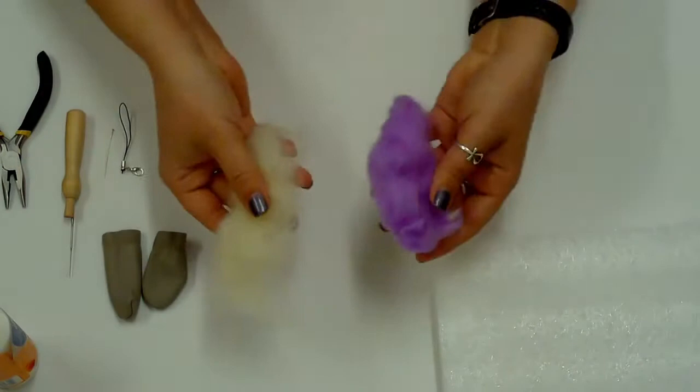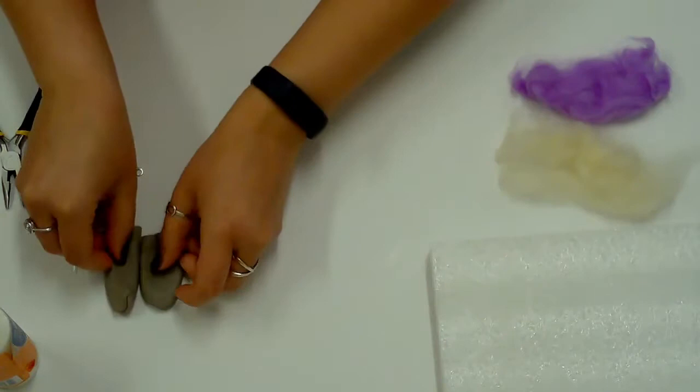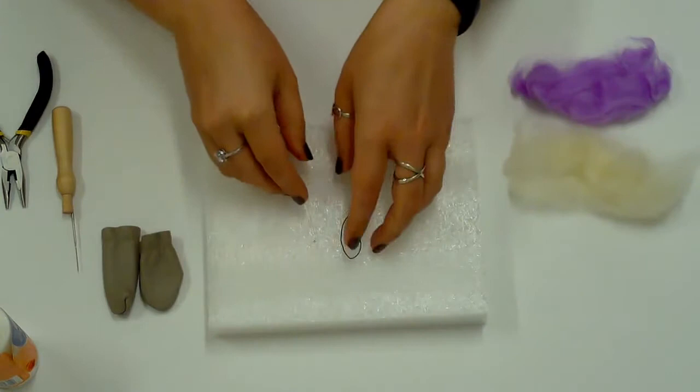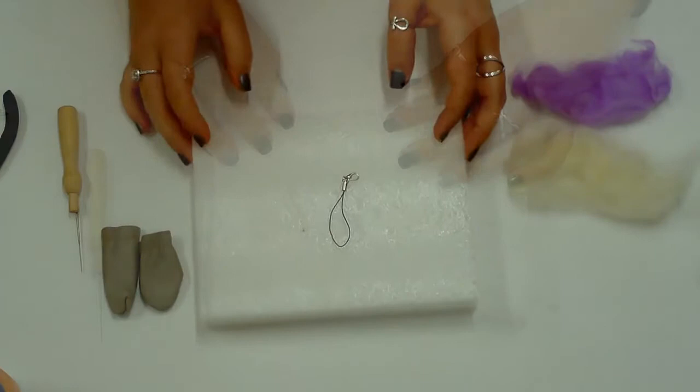Supplies include roving wool in desired colors, barbed needle with holder, finger protectors, styrofoam mat, keychain material including a head pin, pliers, and fabric glue. There are many kits available online that have everything you need.